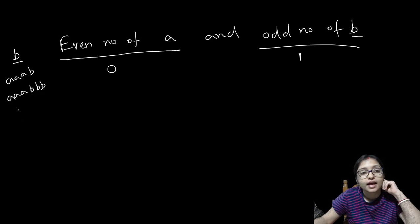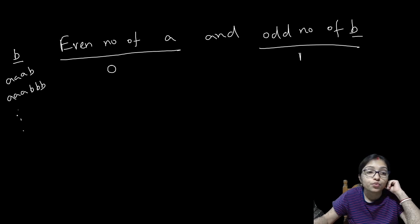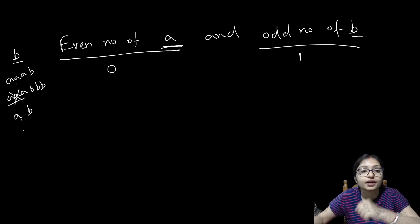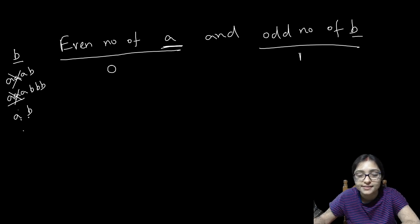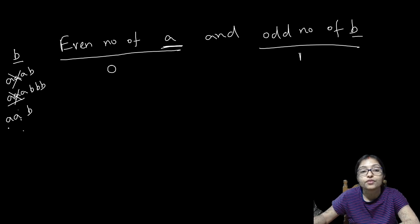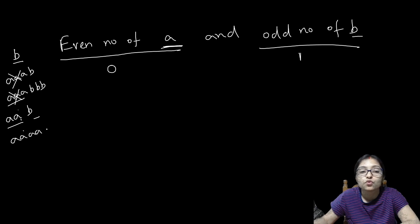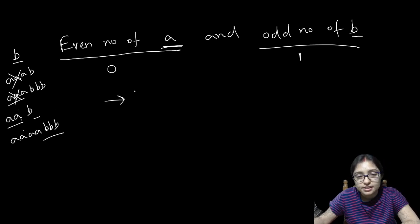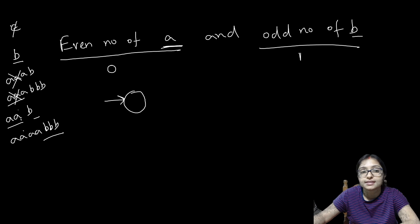It can be AAAB, or AAABBB, and so on. Is 1A and 1B possible? No. AAB is also not possible because it was even number of A. Even number of A means double A, then B. So 4A then 3B — that is possible. Now the initial state: initial and final cannot be the same because epsilon is not accepted here. So whenever 1B comes, that will be my final state.